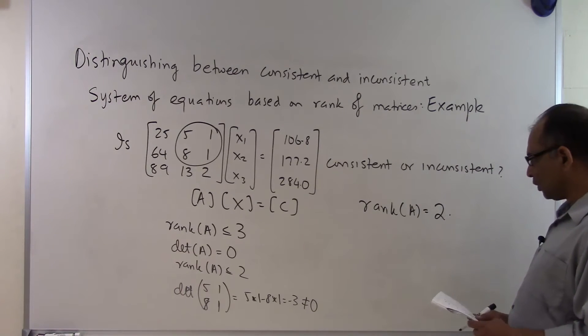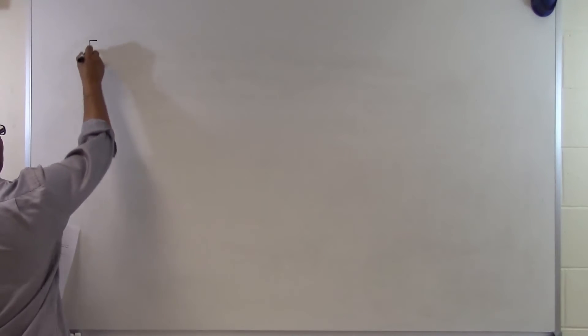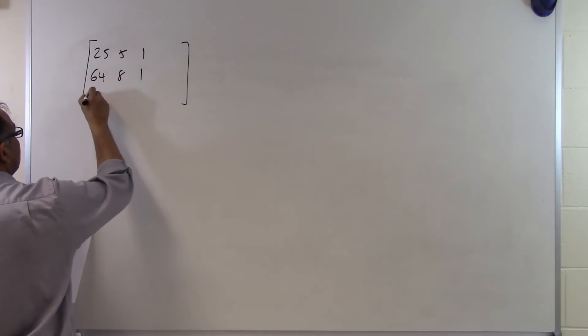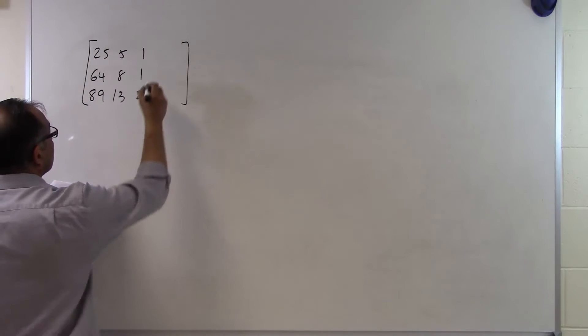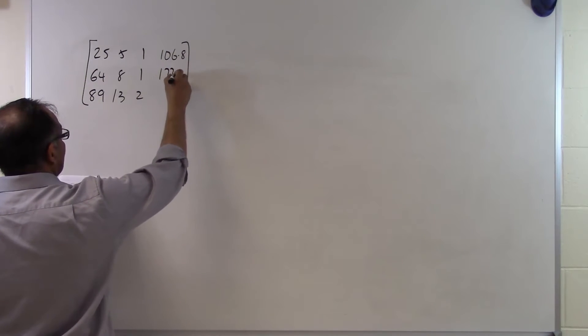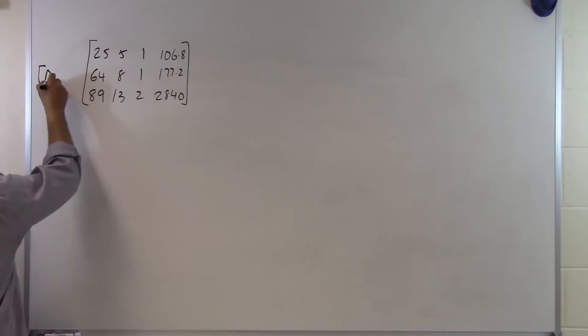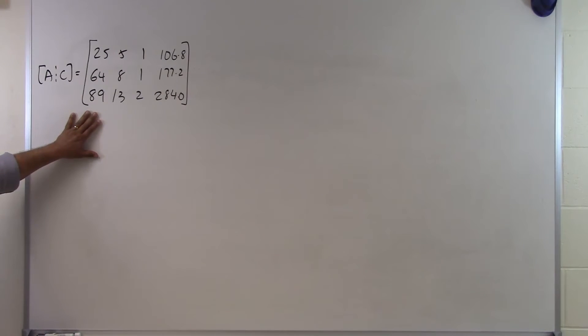Now let's look at the rank of the augmented matrix. The augmented matrix for our example takes the A matrix — with entries 25, 5, 1; 64, 8, 1; 89, 13, 2 — and appends the C vector as a fourth column: 106.8, 177.2, and 284.0. We denote this as [A | C]. We want to find the largest order square sub-matrix with a non-zero determinant. With 3 rows and 4 columns, the largest possible square sub-matrix is 3 by 3.